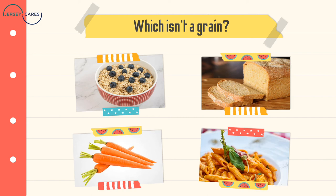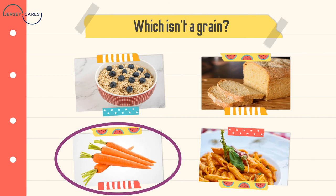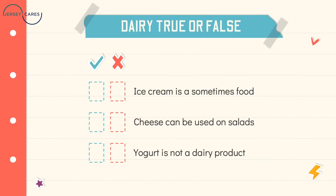For the next review game — which one is NOT a grain? If you guessed carrots, you're right! We have oatmeal, which is a grain; bread, which is a grain; carrots, which is a vegetable; and pasta, which is a grain.